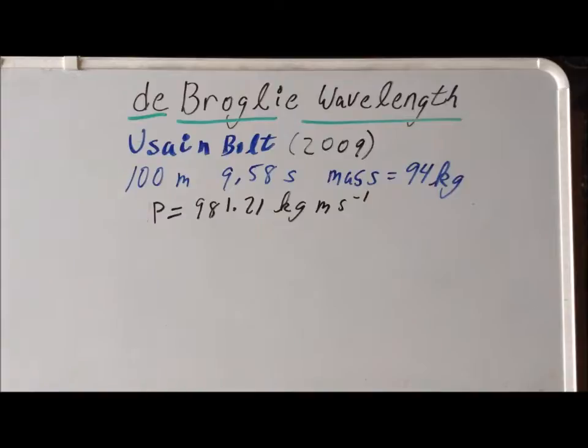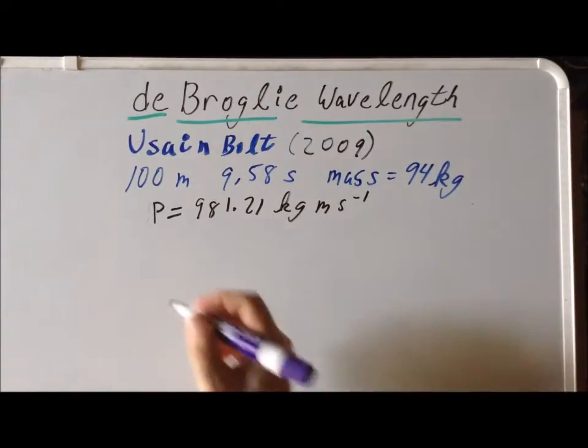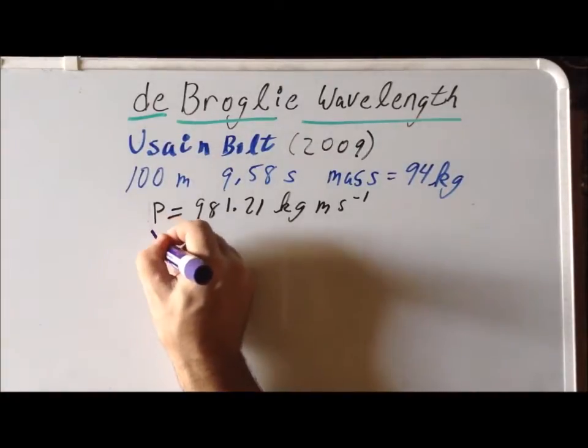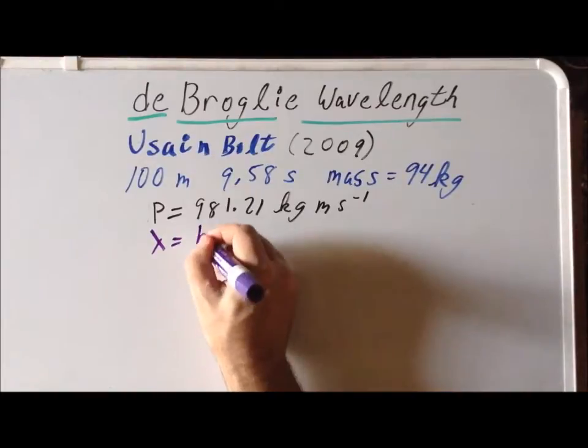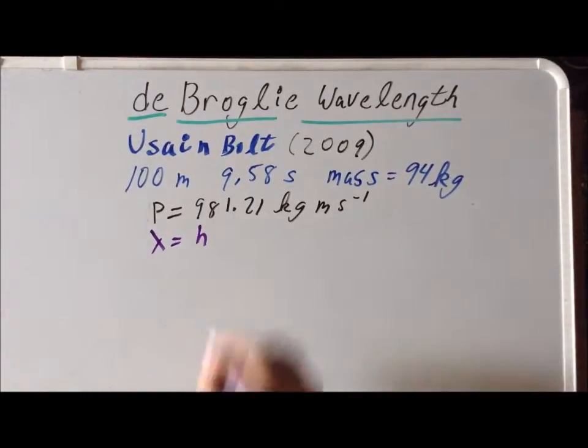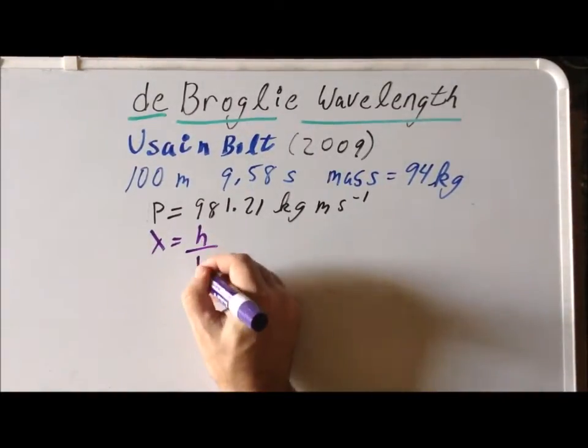Now that we have calculated his momentum, we can use the de Broglie relationship, which tells us that the wavelength associated with an object is equal to the Planck's constant h divided by the momentum p.